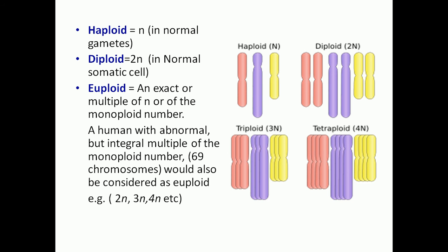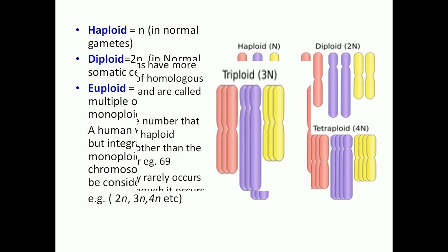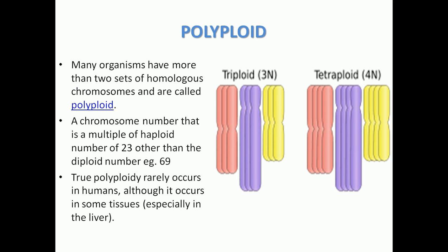Two ploidy groups multiplied with N, which is the haploid number. The first kind of disorder we are going to see is called polyploidy. Polyploidy is where there is an increment of chromosome numbers in a set, where the chromosome number is a multiple of the haploid number.